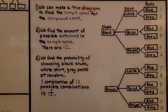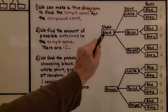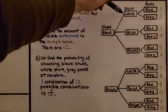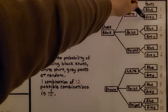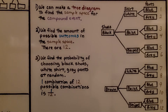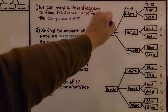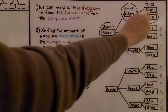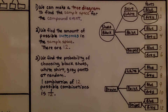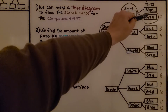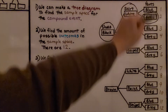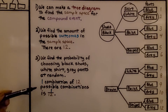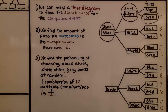We find the probability of choosing black shoes, white shirt, and gray pants at random. We trace that combination on the tree diagram: black shoes, white shirt, and gray pants. Since this is one of the 12 outcomes in the sample space, the probability is one out of 12.